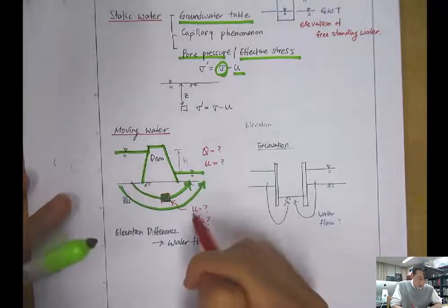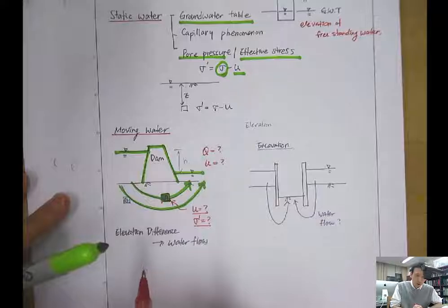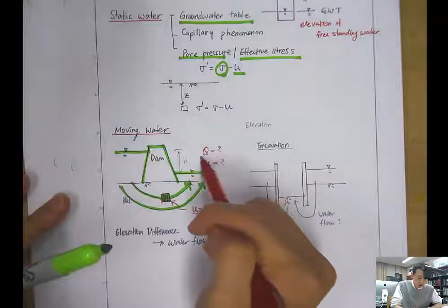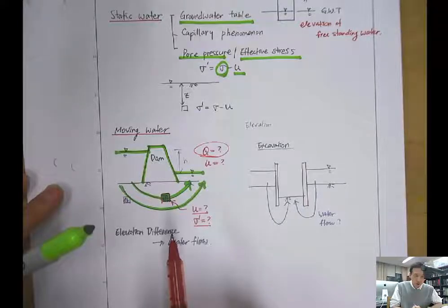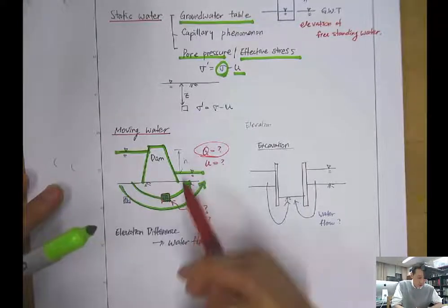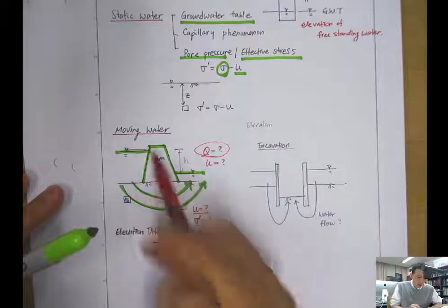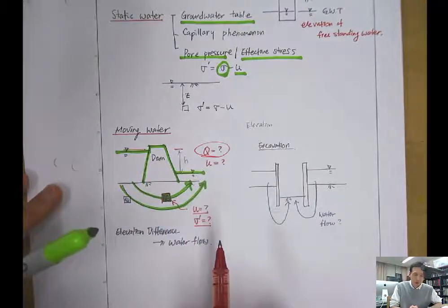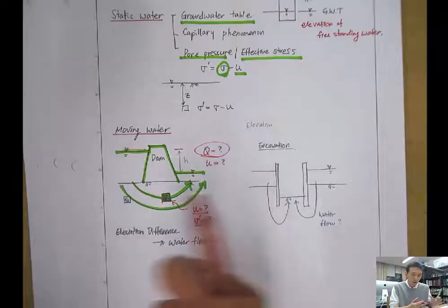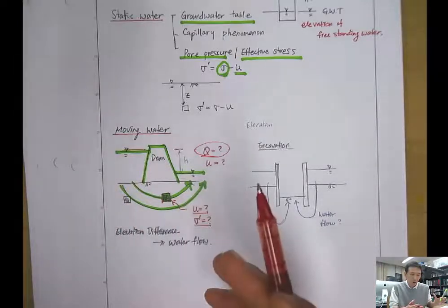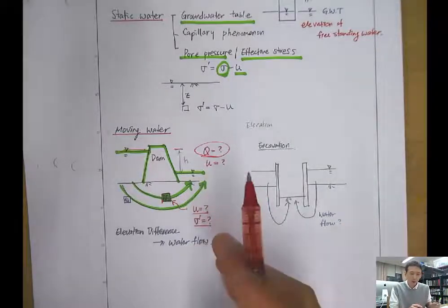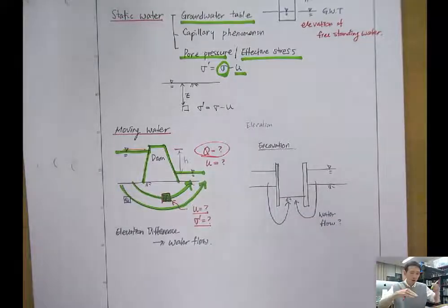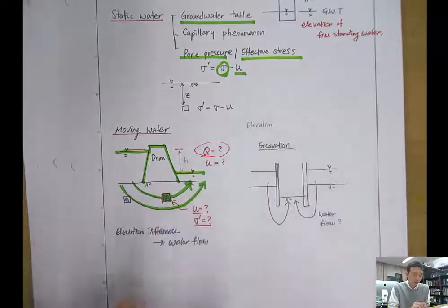So we can estimate the effective stress. And the other question will be: what will be the flow rate passing underneath the dam? It will surely be affected by the height difference between the upstream and the downstream. If you have a bigger height difference — the water level is very high on one end and very low on the other — then the flow rate will be high. If the water levels are similar to each other, then the flow rate will be very slow.